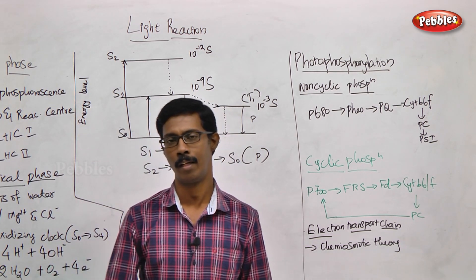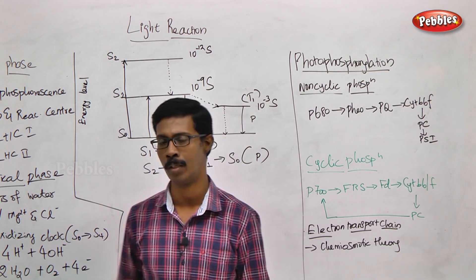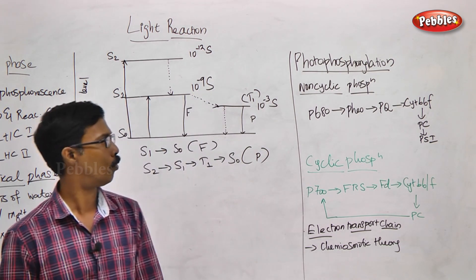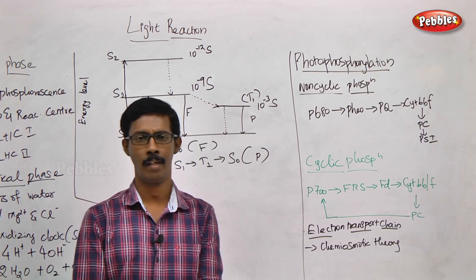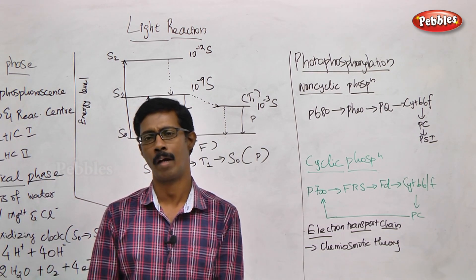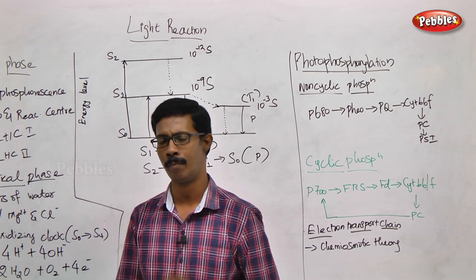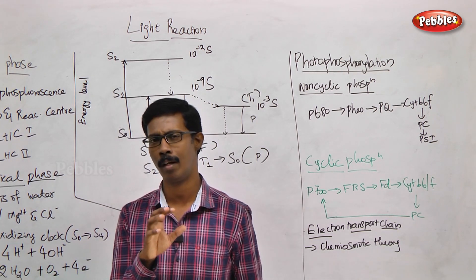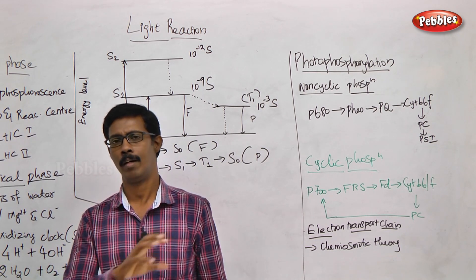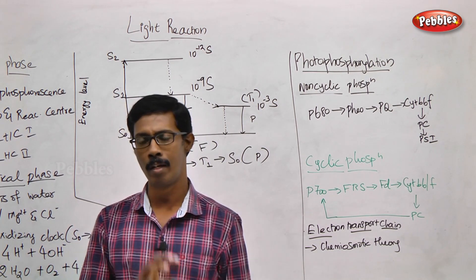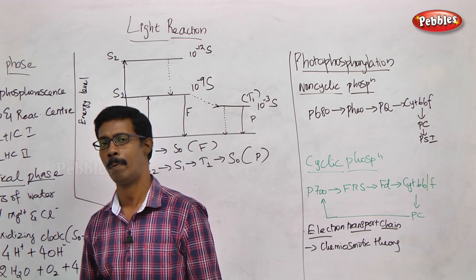In the light reaction, we are going to discuss the photo oxidation phase and the chemo oxidation phase. What is happening in the photo oxidation phase? In the photo oxidation phase, sun radiations hit pigments and are absorbed. The electrons in the pigments become excited when they absorb light energy.